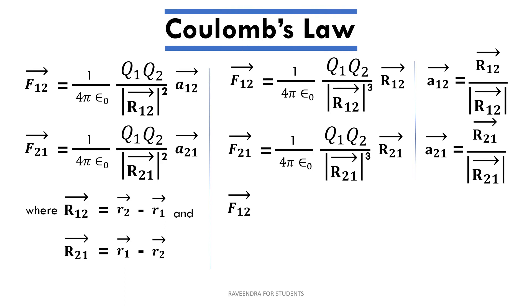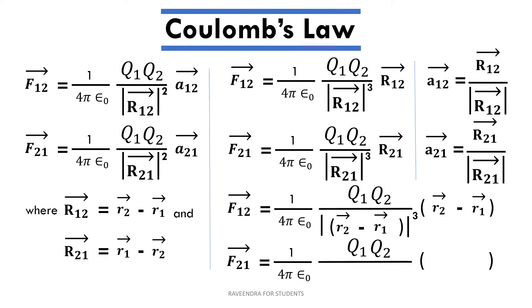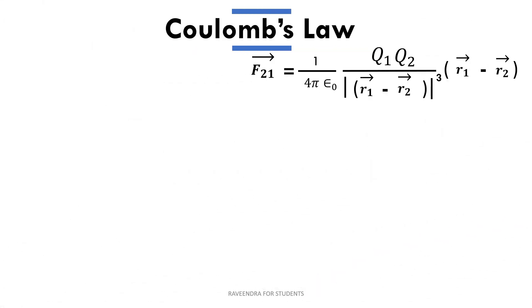We can also represent these forces directly in terms of position vectors. r12 bar equals r2 bar minus r1 bar, and r21 bar equals r1 bar minus r2 bar. So f12 bar is represented as 1 by 4 pi epsilon naught times q1 q2 times (r2 bar minus r1 bar), divided by the magnitude of (r2 bar minus r1 bar) whole cube. Similarly, f21 bar is given with r1 bar minus r2 bar in the numerator and the magnitude of (r1 bar minus r2 bar) whole cube in the denominator. We have now seen expressions for forces on both q1 and q2 in various forms: in terms of r bar, in terms of unit vectors, and in terms of position vectors.